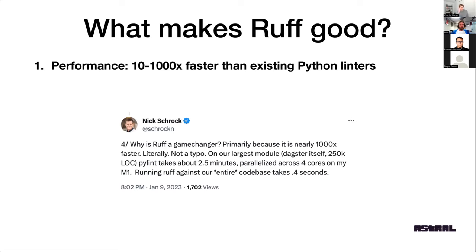Nick Schrock, the co-creator of GraphQL, runs a company called Elemental and talks about how Ruff for them was a thousand times faster. On their codebase it used to take two and a half minutes on his local machine to run Pylint, and now Ruff runs in about 400 milliseconds. In another tweet, he talks about how on CI they would parallelize across all 70 Python packages — those were on separate CI jobs — and now the whole thing runs as a pre-commit hook. Ruff is fast enough that the ergonomics are very, very different.